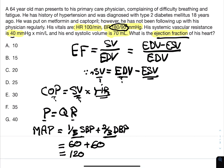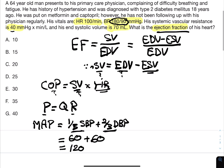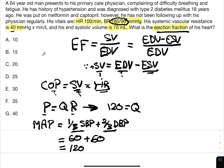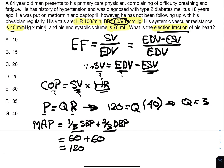Now we can plug into the P=QR formula: 120 equals Q times the resistance, which is 40. This means Q equals 3, so the cardiac output is 3 liters per minute. The SVR unit includes liters and the heart rate is per minute, so cardiac output is measured in liters per minute.